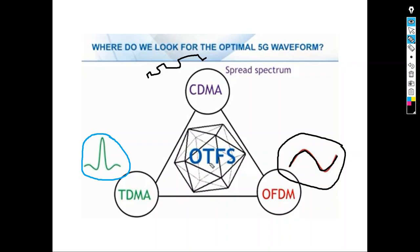Each one of these modulation schemes has its advantages and disadvantages. The goal of OTFS is to bring the advantages of all these schemes together and minimize their disadvantages. TDMA was good for voice communication but poor for equalization — when you have an extremely time-dispersive channel you end up with too much receiver complexity. That's the drawback.